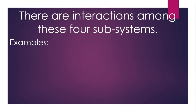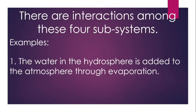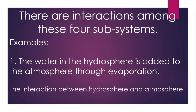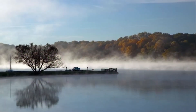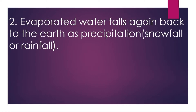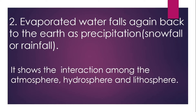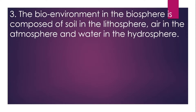There are many examples to prove these interactions. First example: water in the hydrosphere is added to the atmosphere through evaporation — the interaction between hydrosphere and atmosphere. Second example: evaporated water falls back to the earth as precipitation, showing the interaction among atmosphere, hydrosphere, and lithosphere.